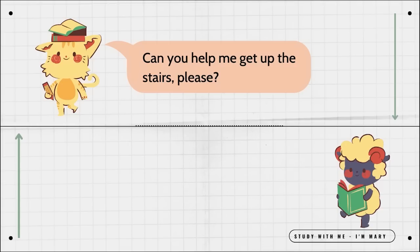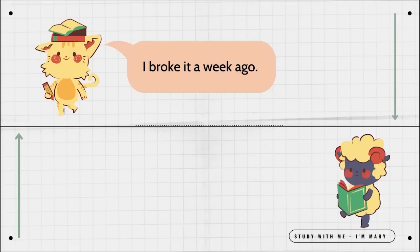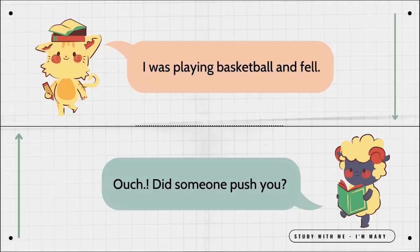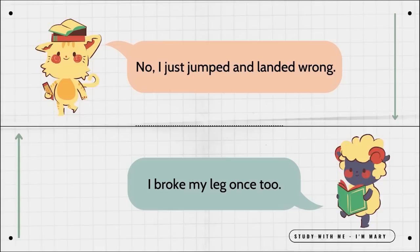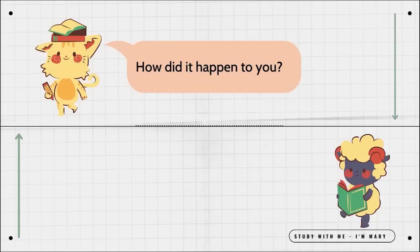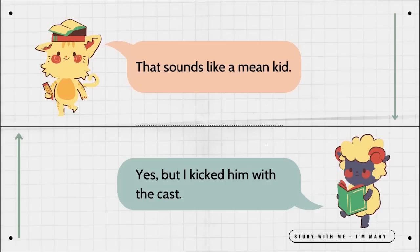Can you help me get up the stairs, please? Of course. What happened to your leg? I broke it a week ago. How did that happen? I was playing basketball and fell. Ouch. Did someone push you? No. I just jumped and landed wrong. I broke my leg once, too. How did it happen to you? A boy pushed me down a hill and I landed on my leg. That sounds like a mean kid. Yes. But I kicked him with the cast.